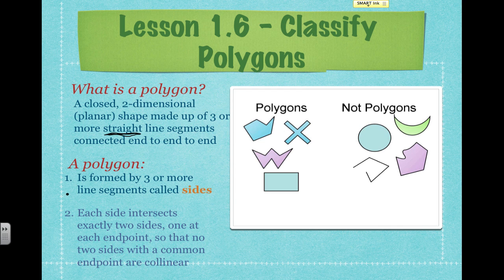So a polygon is formed by three or more sides — three or more line segments, which are called sides. And each side intersects exactly two other sides, one at each endpoint. So no sides are collinear; they don't have intersections with other sides except at their endpoints.